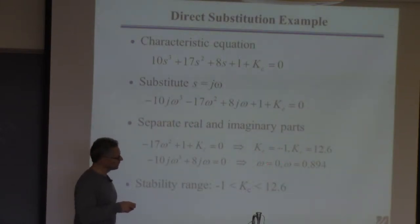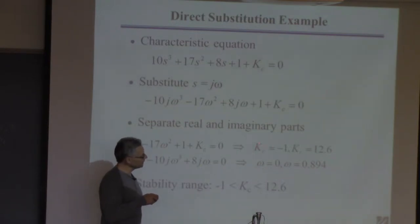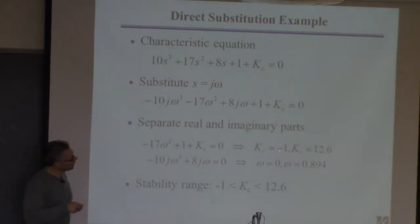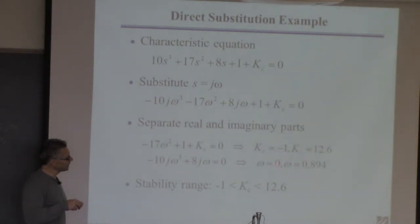What this implies is if you take kc less than minus one, you're going to get an instability that has no oscillation. This is the frequency of the oscillation, zero means it doesn't have frequency. If you go less than minus one, it'll be unstable, but it won't oscillate. It'll be just an exponential instability. But if you go above 12.6, you're going to get oscillatory instability and that's the frequency of that instability.